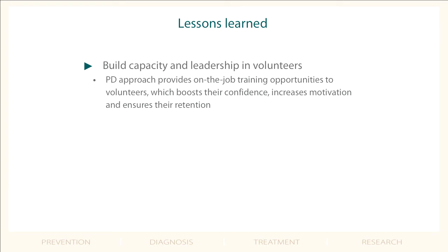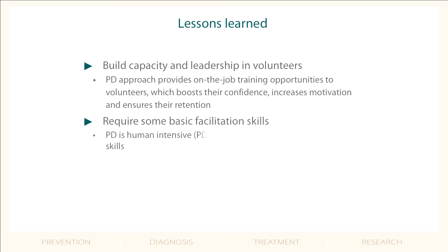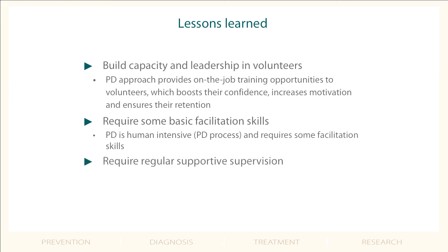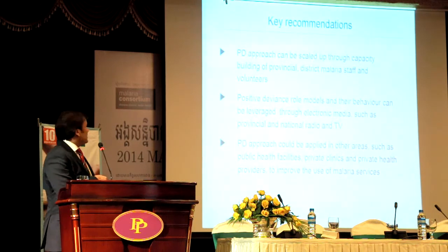One lesson learned — and it's not a very positive word, but we are talking about positive deviance — is that the first phase, the one-week PD process phase, is a bit technical. We need people who have at least some skills in conducting focus group discussions so they can better understand the community. But the rest — the one-year implementation phase — is simple and our volunteers can easily do it. It also needs supportive supervision.